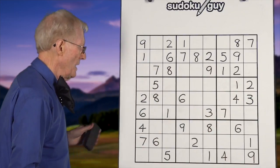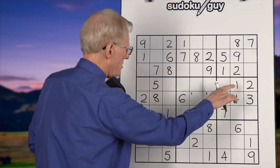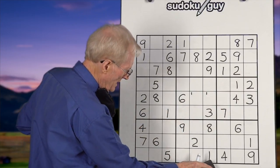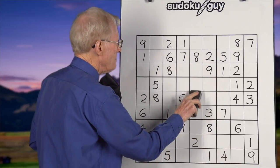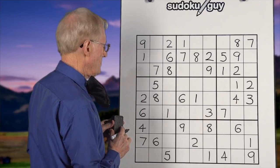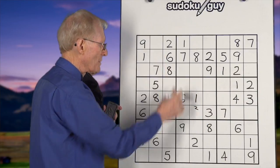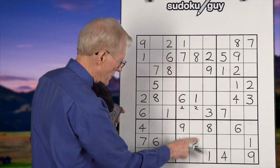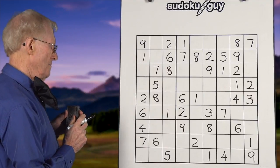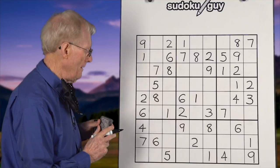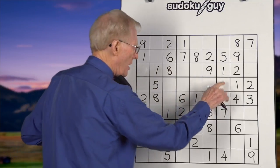Now we do the middle three horizontal blocks. For 1s: we could have a 1 in two positions. Looking down, there's a 1 down here, so this cannot be a 1 — this becomes the real 1. For 2s: we have a 2 in the middle and a 2 on top. Here we could place it in two spots; looking up, there's a 2 there, so this cannot be a 2 — this becomes the 2. There's only one 3, one 4, one 5. For 6s: we have two 6s — a bottom, a middle, and a top — so this becomes a 6.